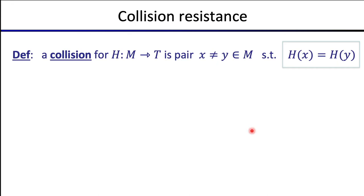A key concept in studying cryptographic hash functions is what's called collision resistance. A collision for a hash function H from M to T is a pair of distinct inputs X and Y such that H(X) equals H(Y). We say that X collided with Y because H(X) equals H(Y).